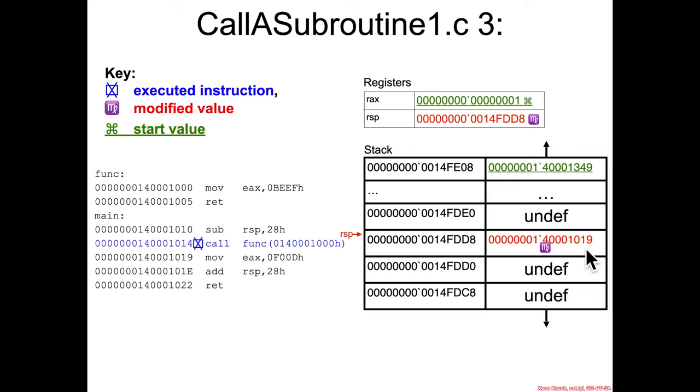14001019 is the address of the assembly instruction after the call assembly instruction. So call will jump to function. And when function returns back, it's going to not go back to the call because that would cause an infinite loop. It's going to go back to the assembly instruction after the call. So RSP moved down. It was up here and then it moved down by 8 because of this return address being pushed onto the stack.